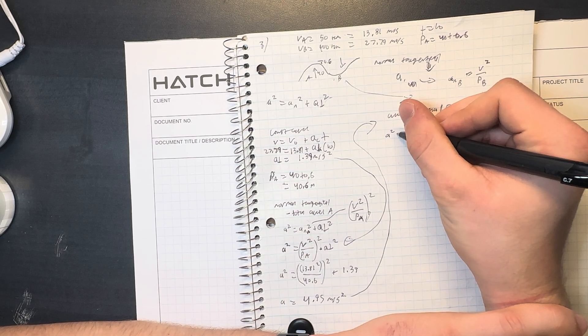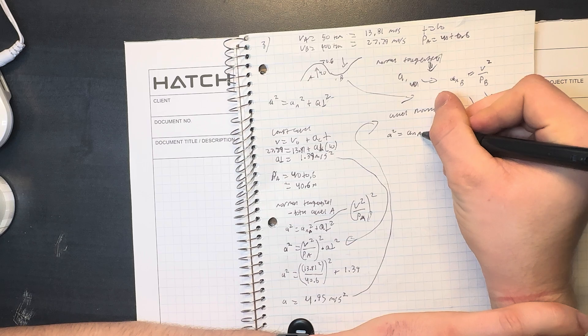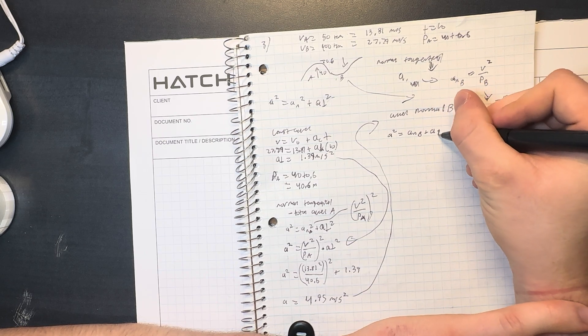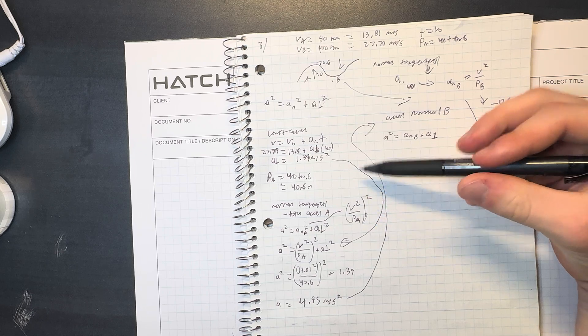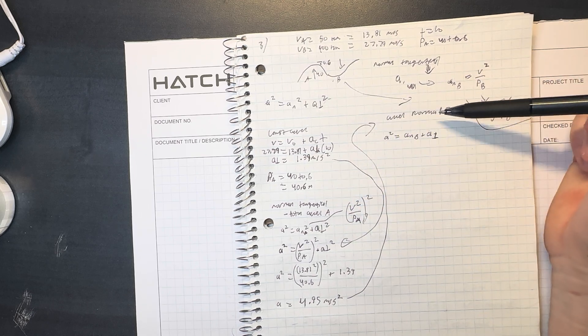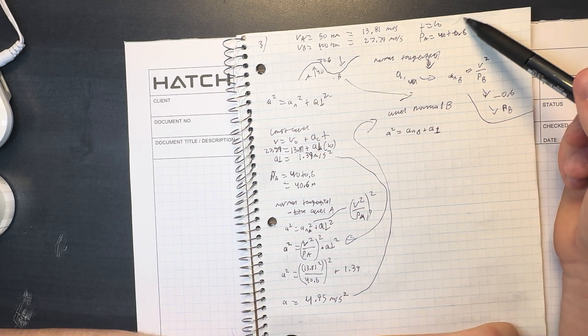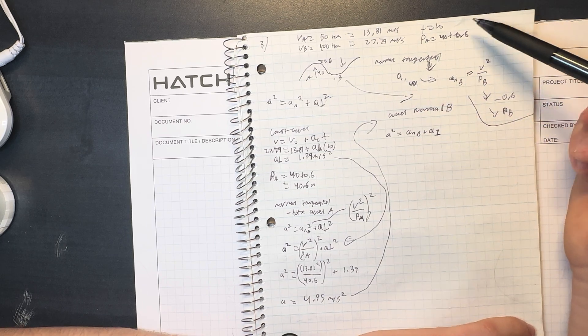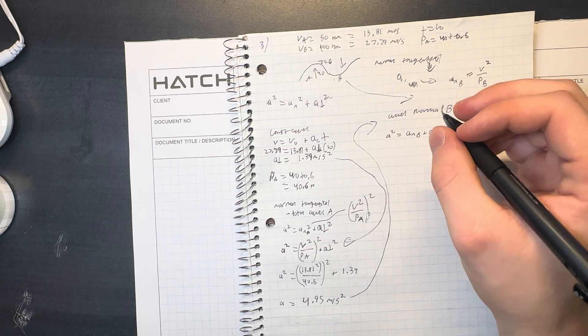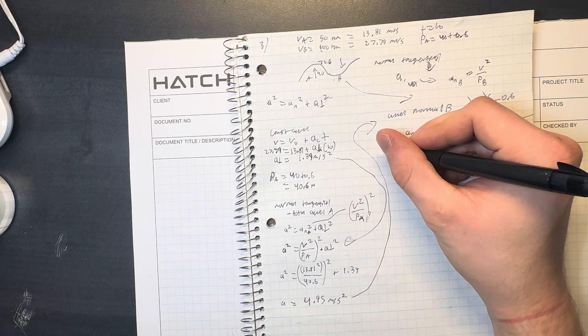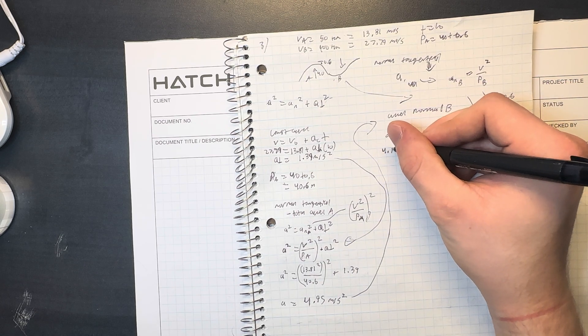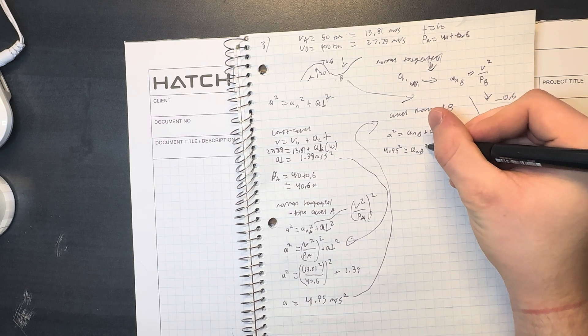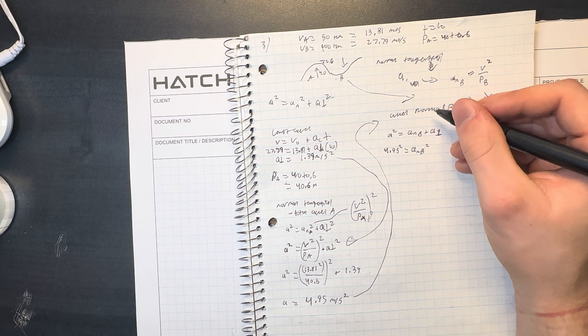So a squared equals a_n_B squared plus a_t squared. So a_t and a are always the same, this changes because this is due to the curvature. So we can put in 4.95 squared is equal to a_n_B squared throughout the squares.